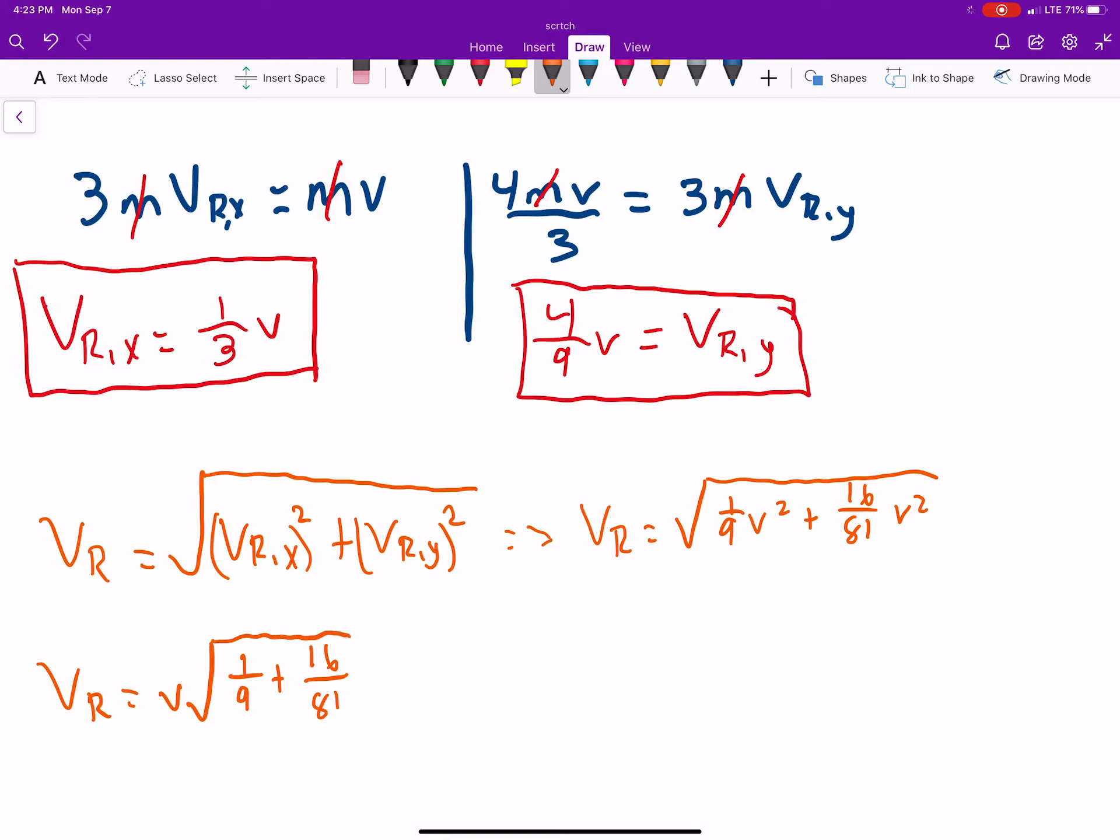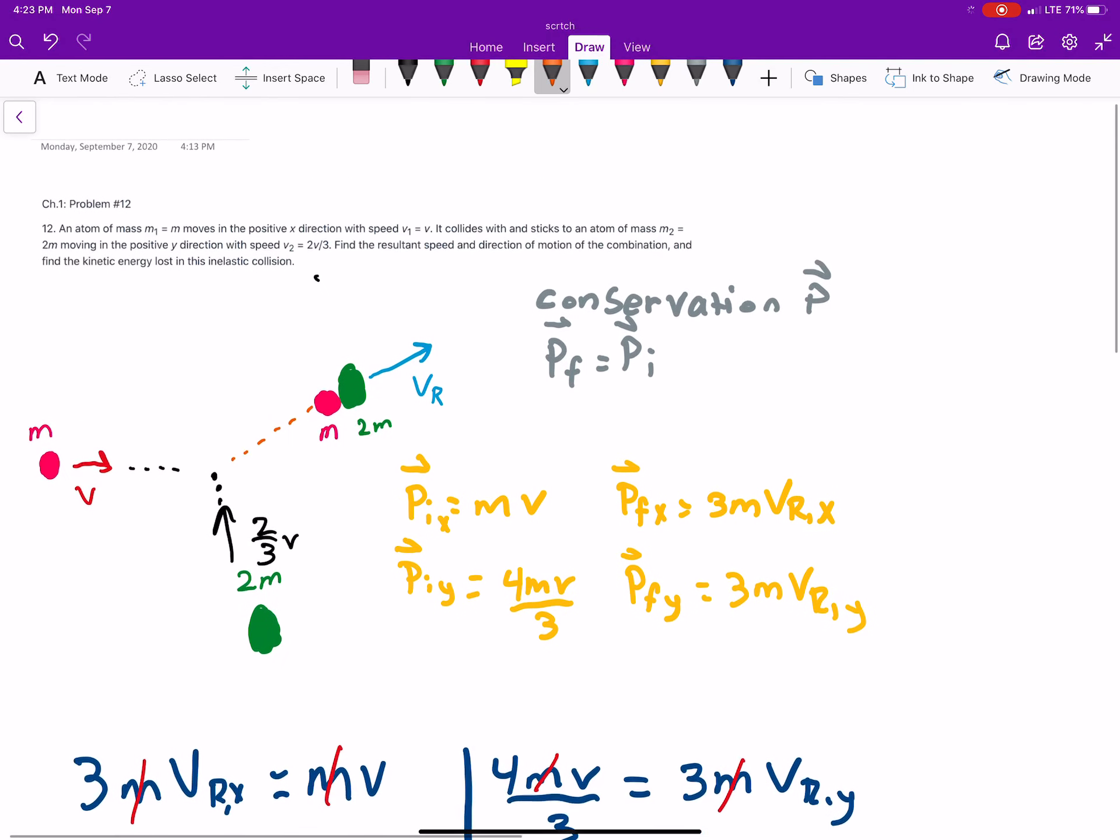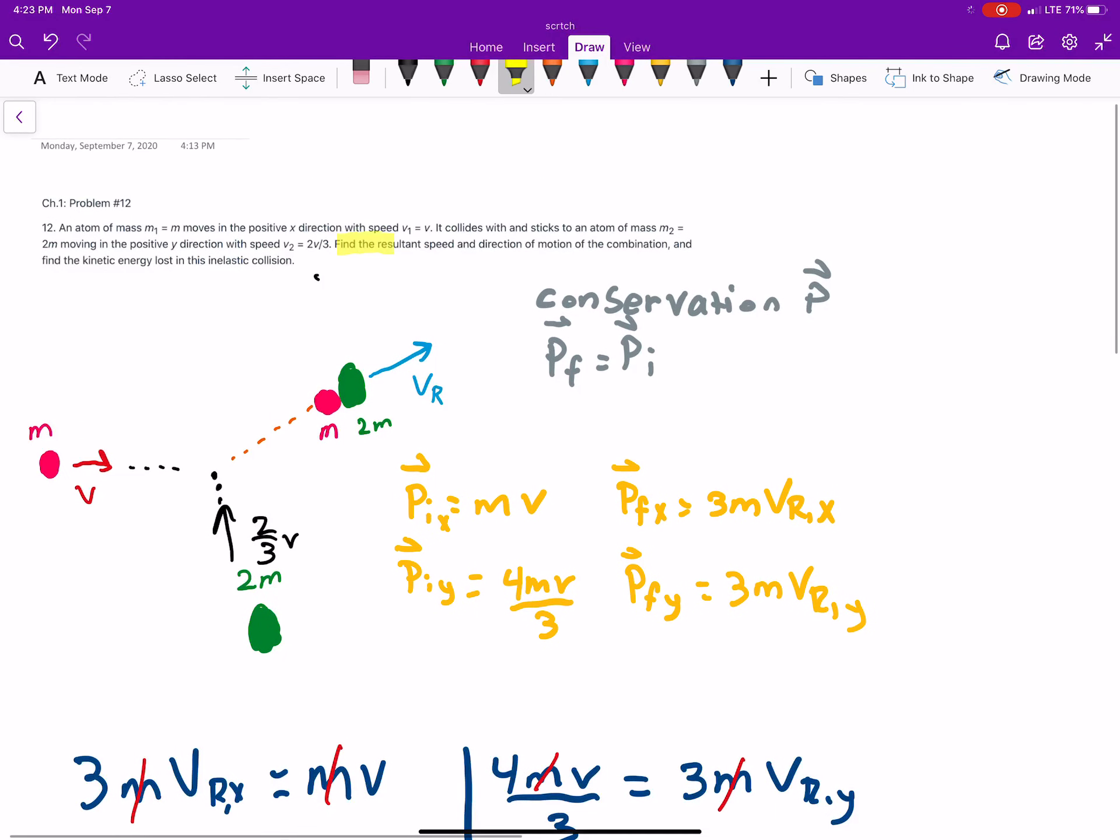And, if you work that out, I have a calculator here, I'll just do that really fast. So, 1/9 plus 16 over 81 is 25 over 81, or 5v over 9. So, this is the first part of the question. The resultant speed.